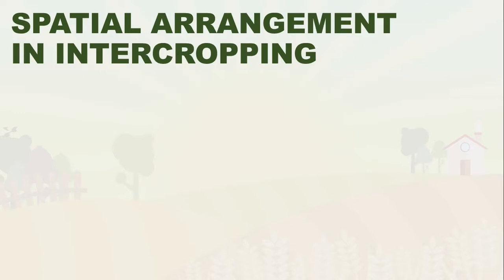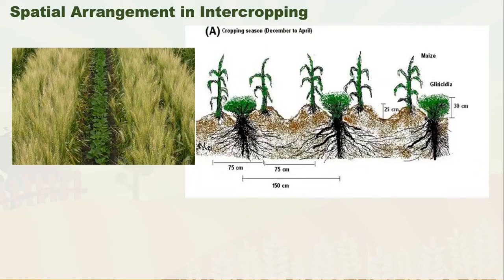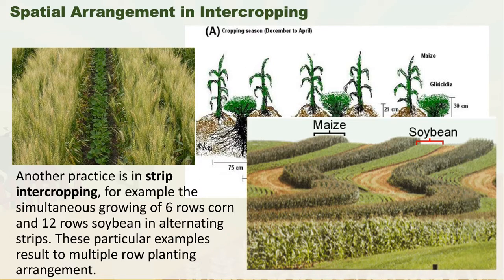Next is the special arrangement in intercropping. Special arrangement is a systematic apportioning of the farm area for crop production. In multiple-cropping by intercropping, the inter-crop can be planted within the rows of the main crop, between the rows of the main crop, or in the replacement series. An example of strip intercropping is the simultaneous growing of six-row corn and twelve-row soybean in alternating strips, resulting in a multiple-row planting arrangement.